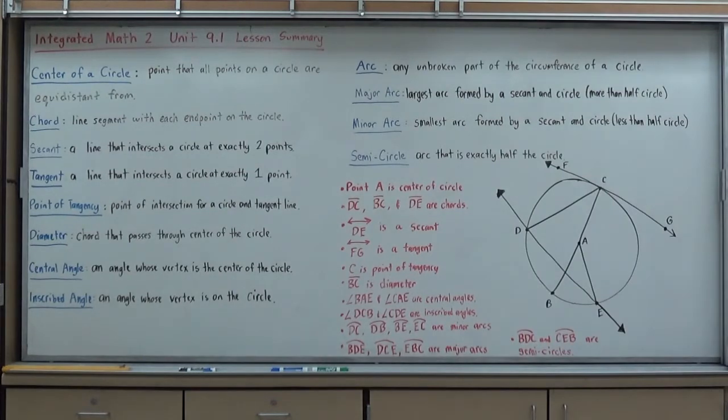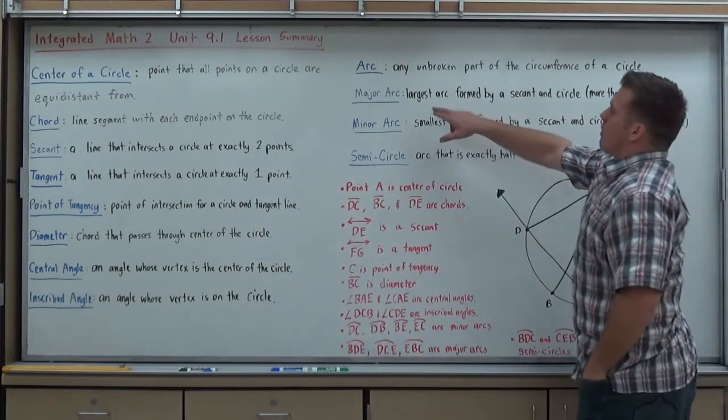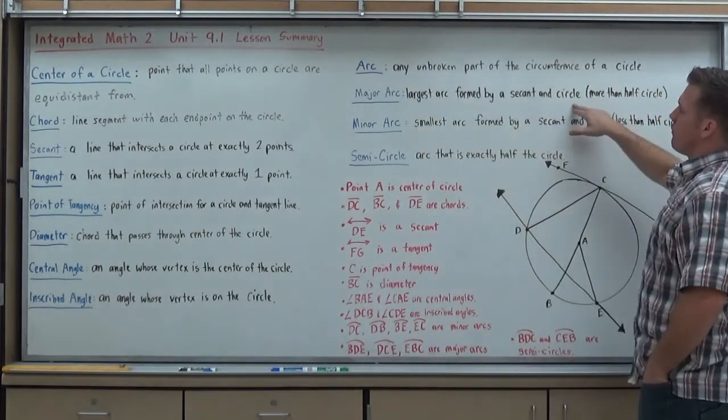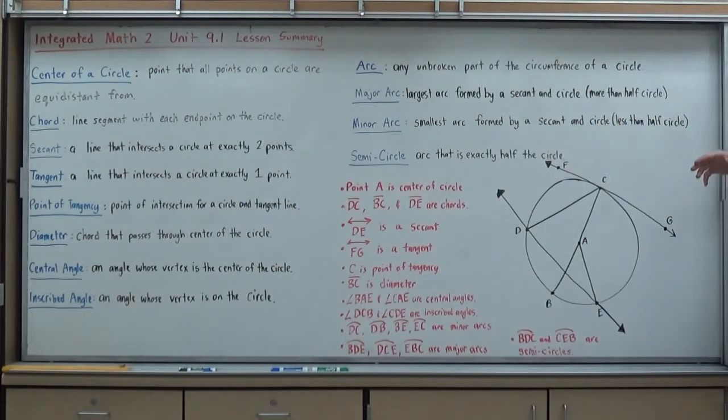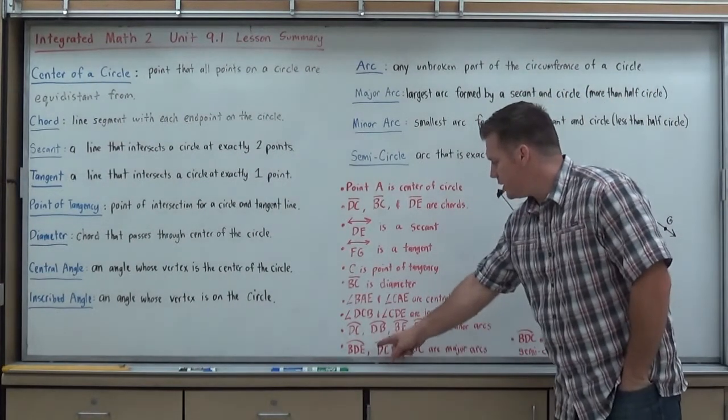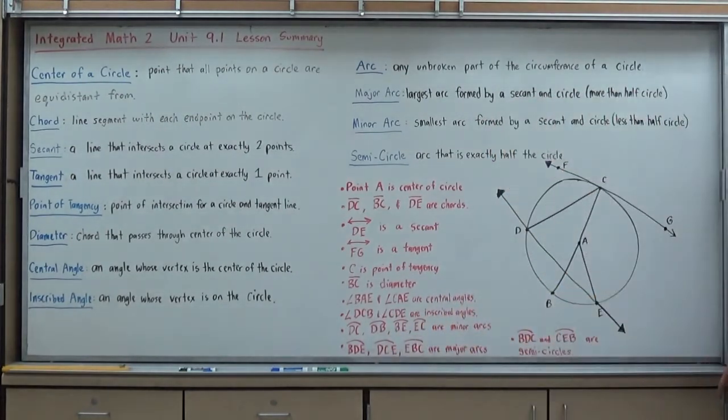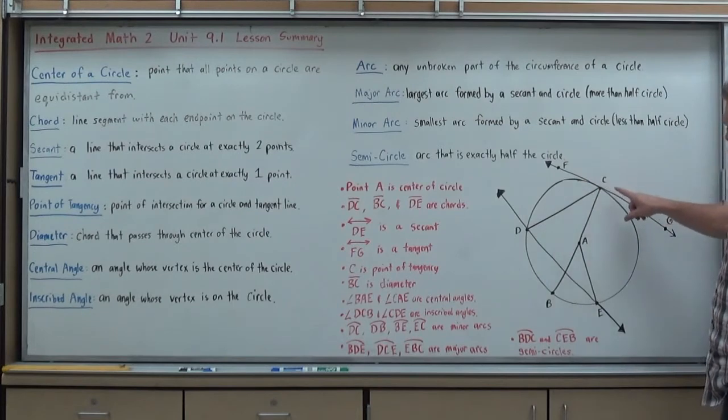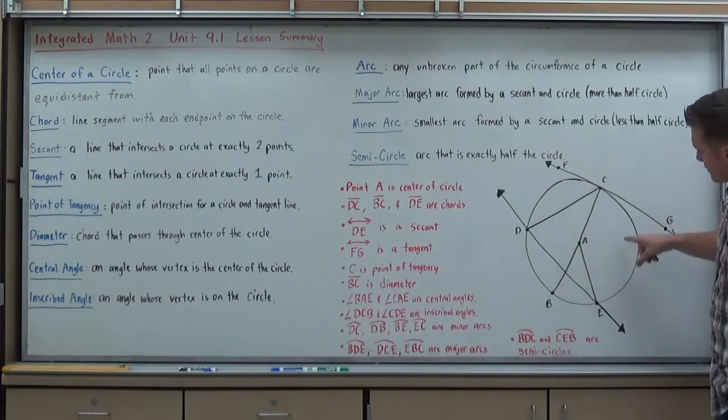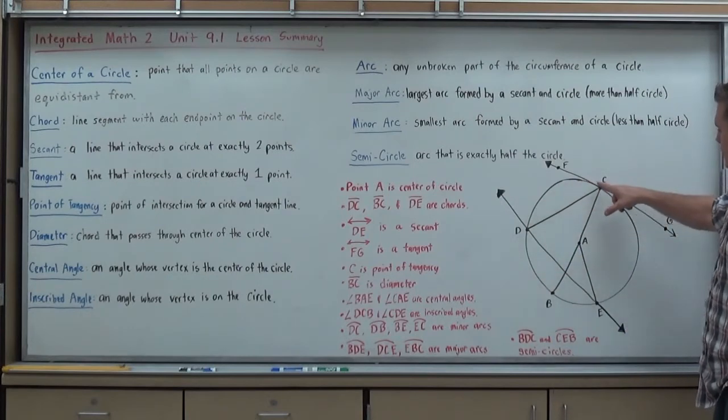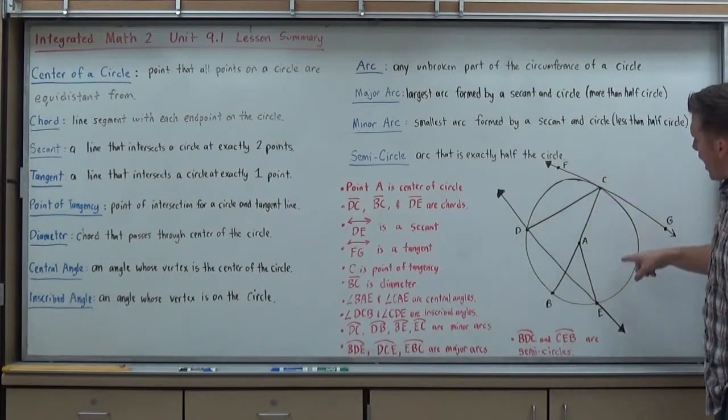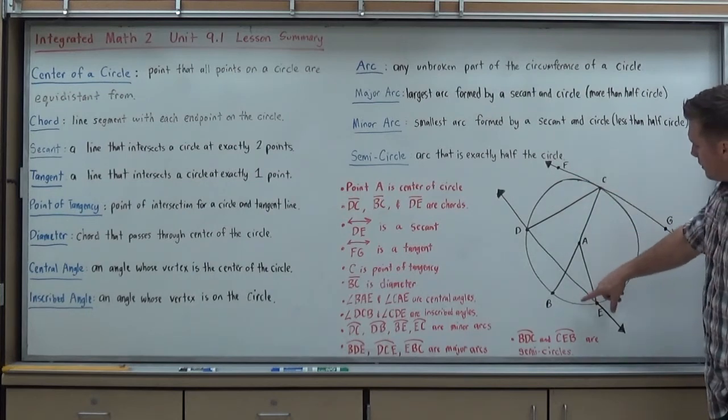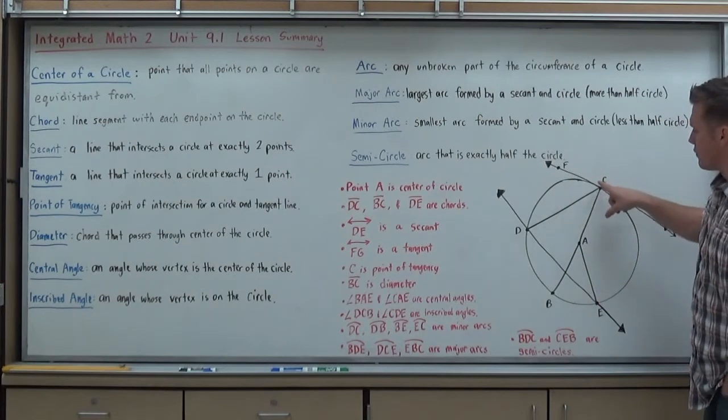We can also have what we call major arcs and minor arcs. A major arc is the largest arc formed by a secant in a circle. Easier definition: a major arc is any arc greater than half the size of the circle. We tend to use three vertices to describe those. So when I wrote my major arcs, they were BDE, DCE, and EBC. So BD to E is almost the entire circle, that's a major arc. DCE, D to C to E, again that's at least more than half, so that's a major arc. And E to B to C, again more than half the circle, it's a major arc.